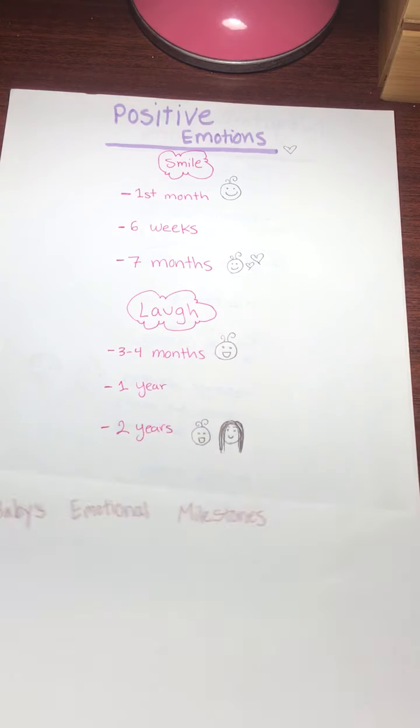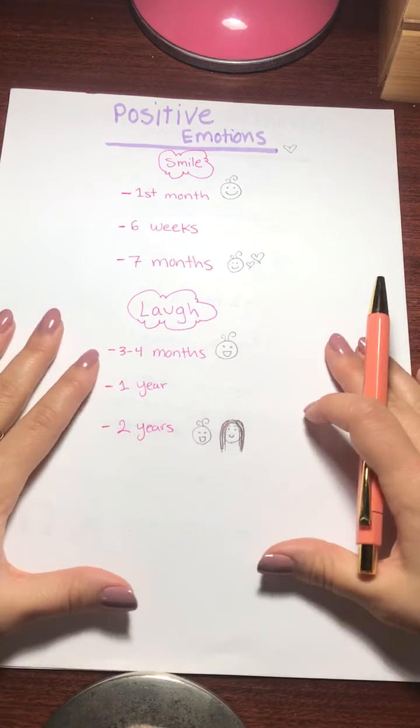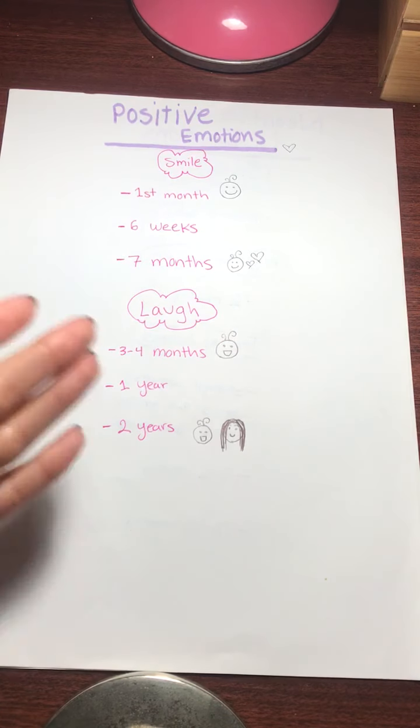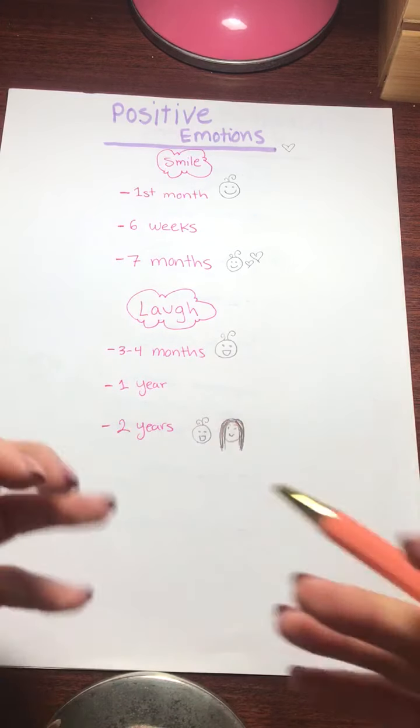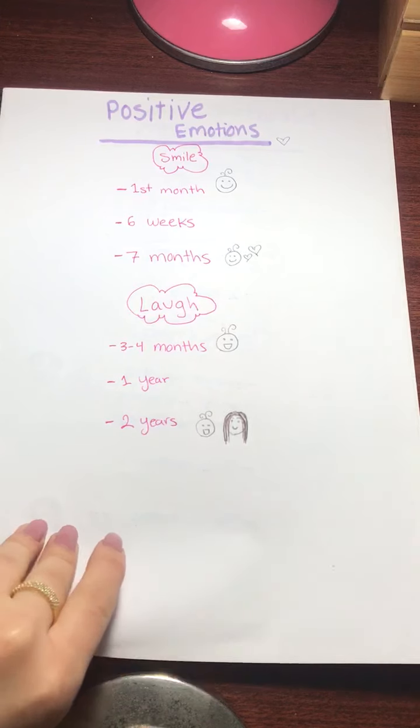And by two years your baby should respond to their own behavior. They might think that something they did was funny or they may even try to make other people laugh at this point. Kind of understanding the power that that laughter holds. And we'll dive into some negative emotions.